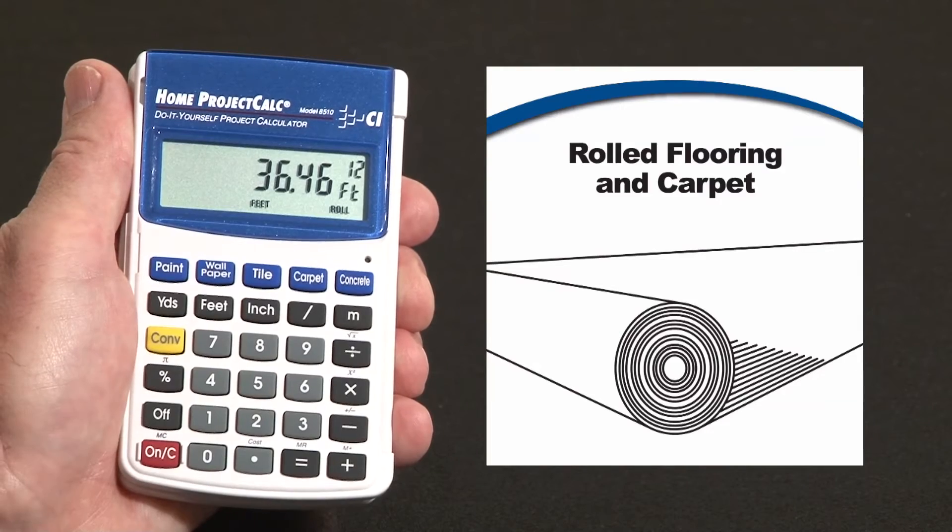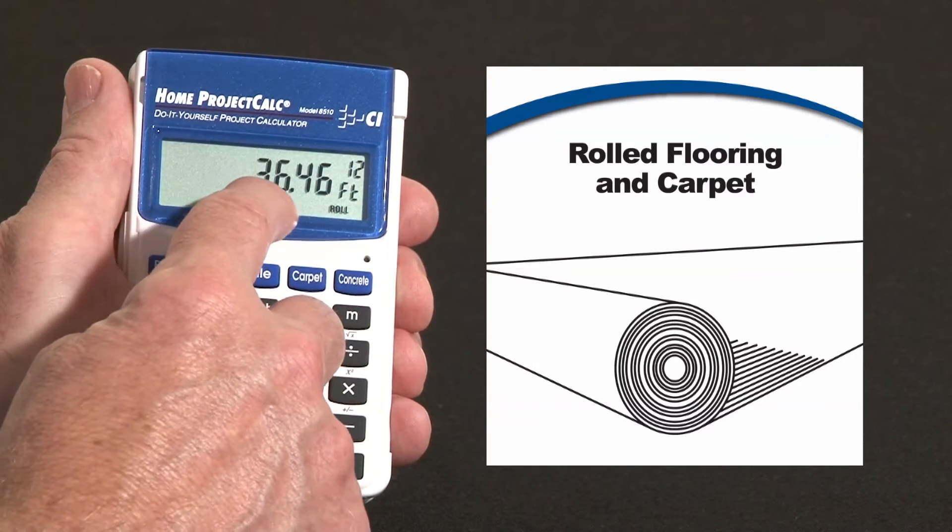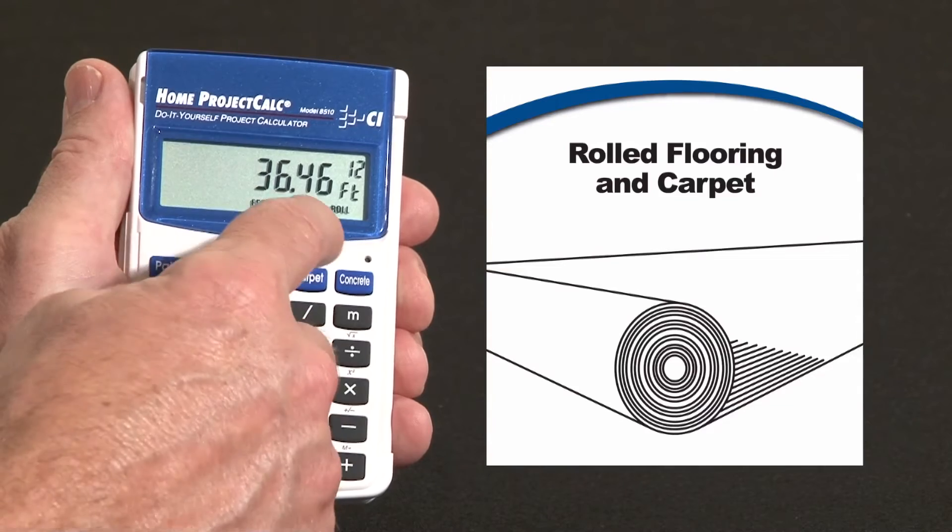Pressing it again tells me for a 12-foot wide roll I'm going to need 36, almost 37, lineal feet of that roll.